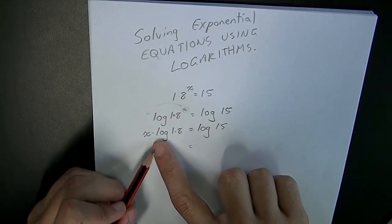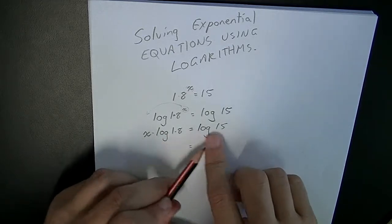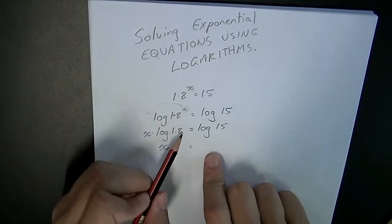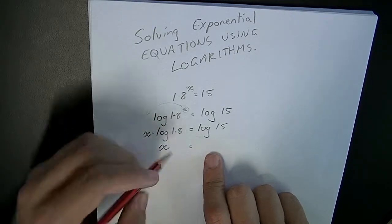If we want to get rid of log 1.8 from this side, we just need to divide both sides by log 1.8. That's going to move that log 1.8 from this side down to this side.